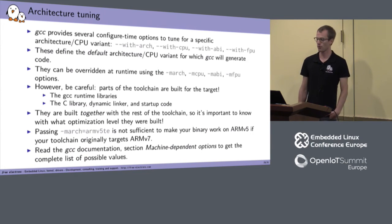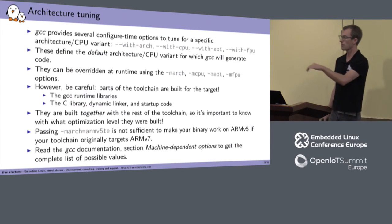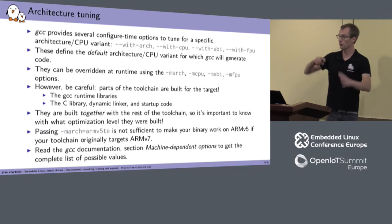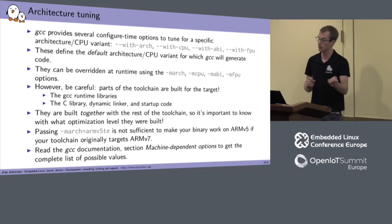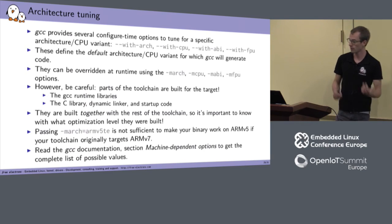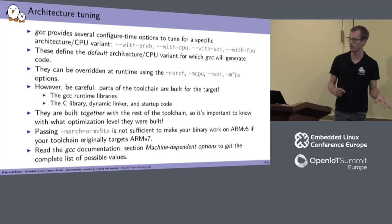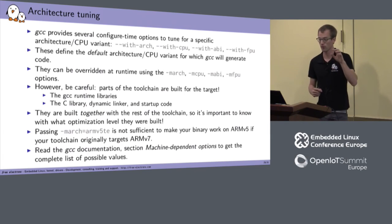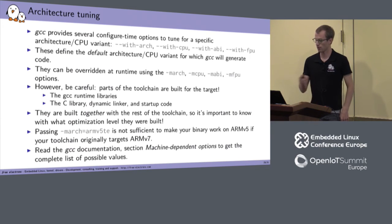GCC provides configure-time options to tune for a specific architecture or CPU variant: --with-arch, --with-cpu, --with-abi, --with-fpu. These define the default values for -march, -mcpu, -mabi, -mfpu, so GCC will by default produce binaries optimized for that CPU variant. They can always be overridden at runtime with the corresponding -m options. However, the C library and GCC runtime libraries have already been built as part of the toolchain, so you must ensure they were built with CPU tuning matching your actual target.